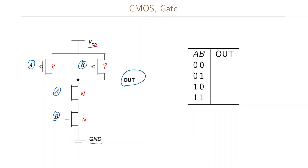Let us try to understand what happens here by looking at the truth table for this gate. We have two inputs A and B, and the truth table enumerates all possible combinations. Starting with both being zero: if the gate is zero, a P transistor is conducting, so both P transistors are conducting. The N transistors, where the gate is low, will act as open switches — not conducting. So we have a short circuit from the power supply to the output, which means this will output a one.